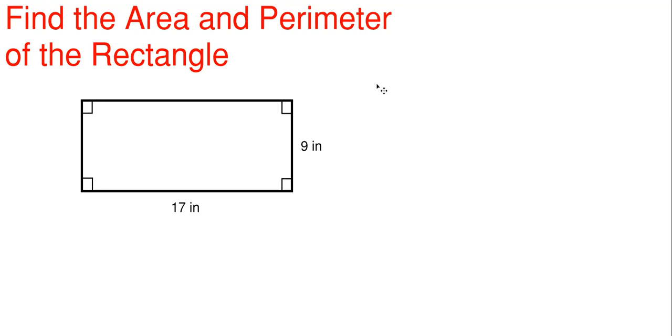So with a rectangle, you will have two sides that are equal and the other two sides will be equal in value. So what that means is that when you have nine inches on this side, this side over here is also nine inches. And then when 17 inches is on this side, this other side at the top is also 17 inches.